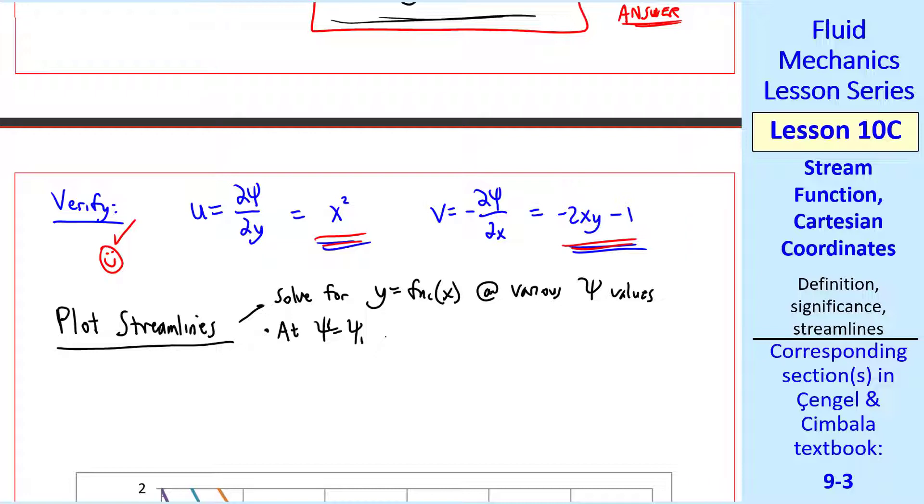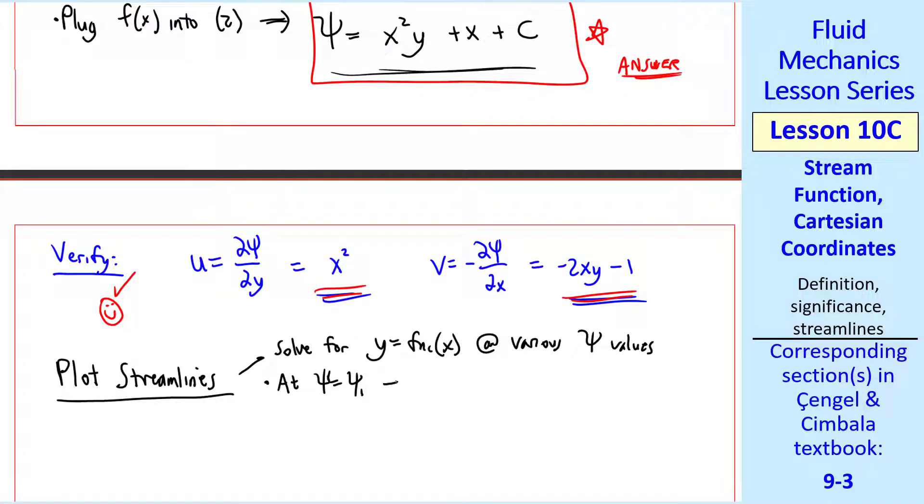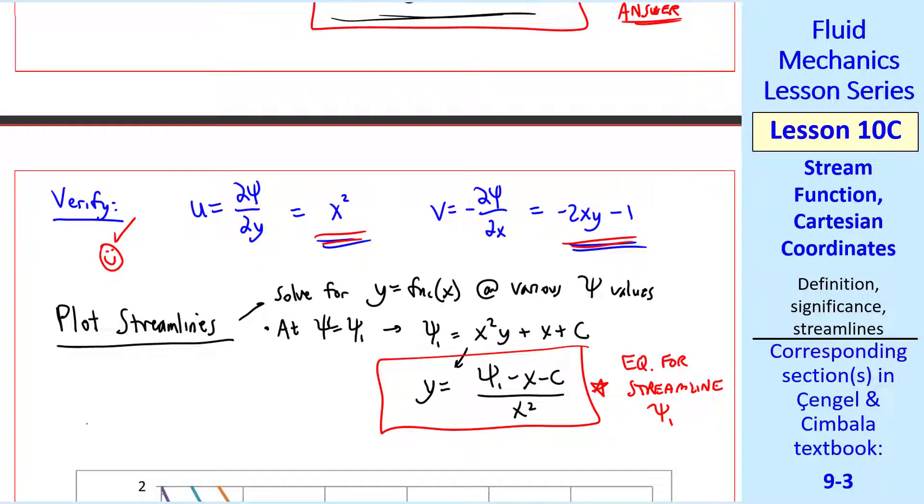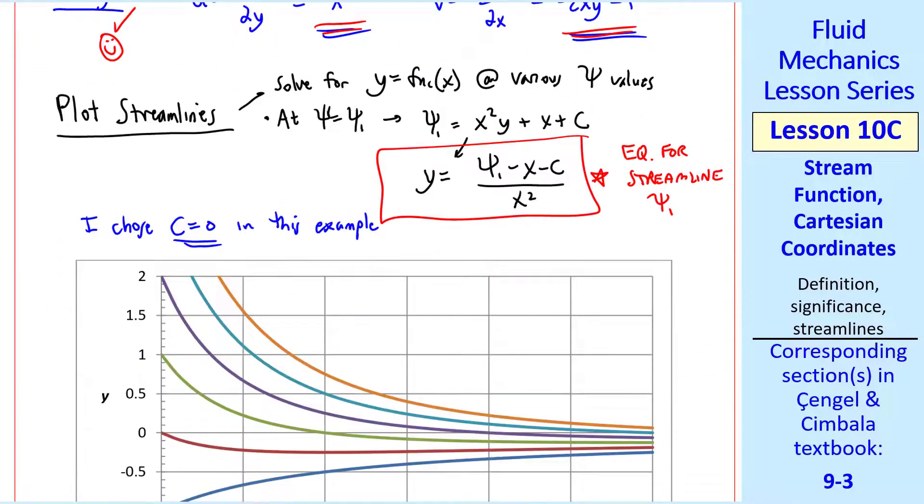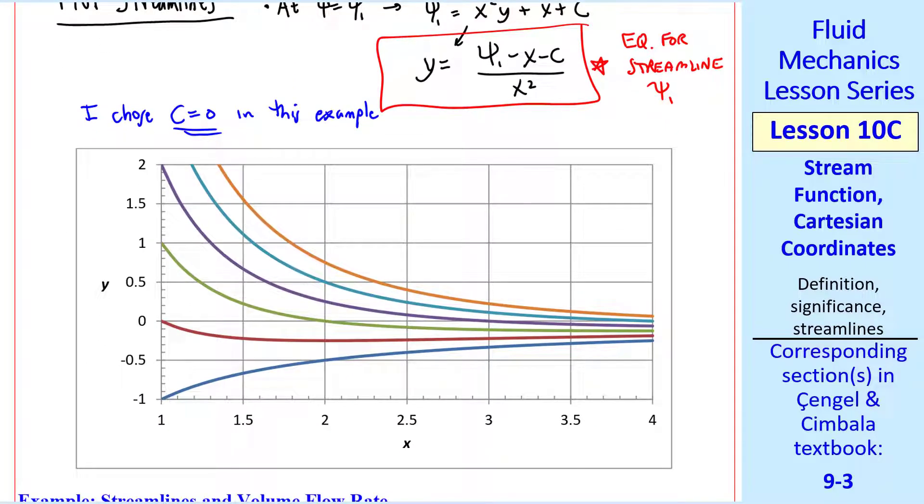So at psi equals some value psi 1 from our above equation we have psi 1 equal x squared y plus x plus c. We're solving for y. We get y equals psi 1 minus x minus c over x squared which is the equation for streamline psi 1. C is arbitrary so I chose c equals 0 in this example but you're welcome to choose any c you like. So let's pick a psi 1 and then plot this. I did it in Excel and these are the streamlines for various values of psi.